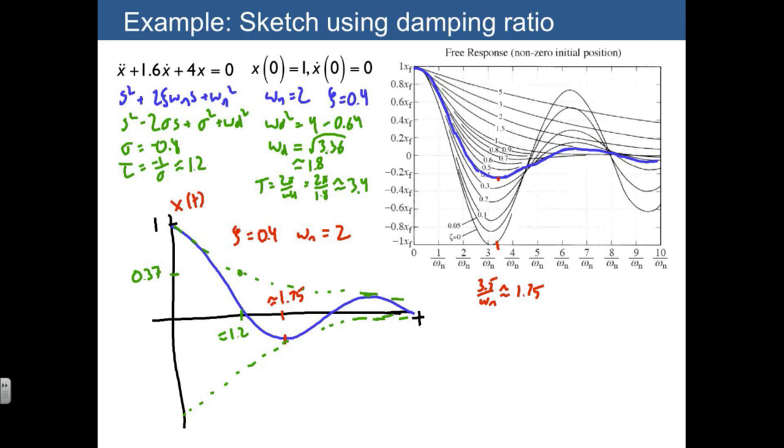I also want to show the period of the sinusoid, and that may be a little bit harder to show. I'm just going to pick out the times between zero crossings, and I'm just going to label that as about 3.4.